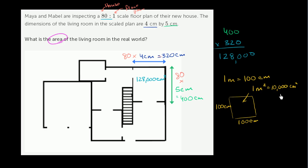So you have 10,000 square centimeters for every square meter. And so if you wanted to convert 128,000 centimeters squared to meters squared, you would divide by 10,000. So dividing that by 10,000 would give us 12.8 square meters.